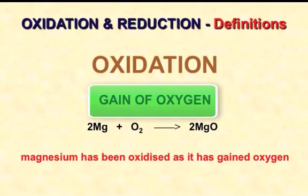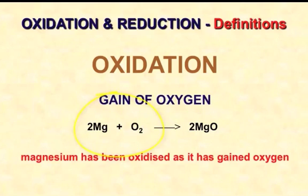So the simplest definition of oxidation is just something that gains oxygen. Magnesium here is oxidized. It has been oxidized because it's gained oxygen.